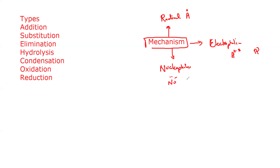Addition reaction means when we have multiple reactants and get only one product. For example, C₂H₄ reacts with H₂ to give C₂H₆ — that is addition. Substitution means an atom or group of atoms replaces another atom or group. For example, CH₄ reacts with Cl₂: one chlorine takes the position of a hydrogen and vice versa — the two atoms swap places.